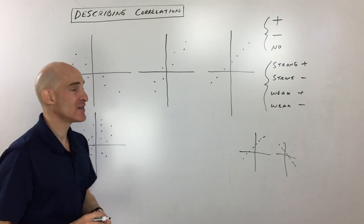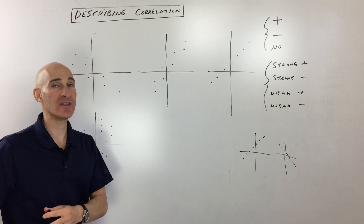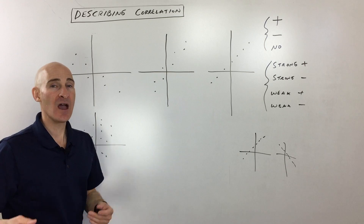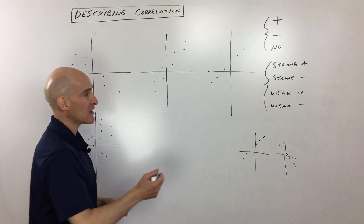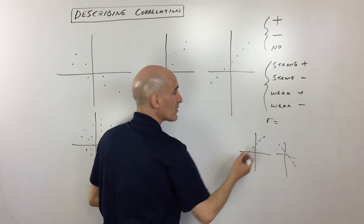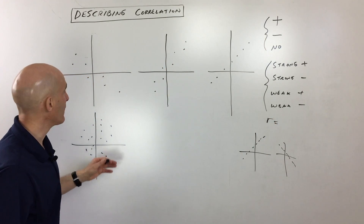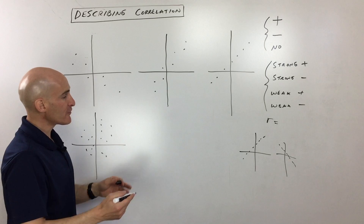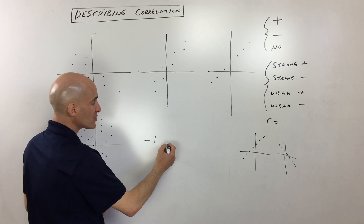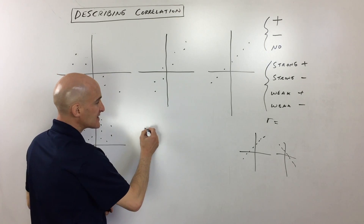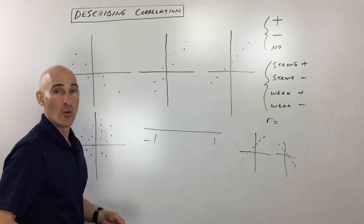Let's see if we can classify these scatter plots. At the end of the video, I'm also going to show you on the calculator how to actually find out what that r value is. They use r to represent the correlation coefficient, and I'll show you how that works as well. Now, when you talk about r values or correlation coefficients, it's on a spectrum from negative one to one.